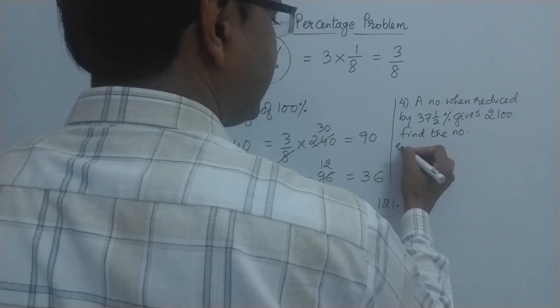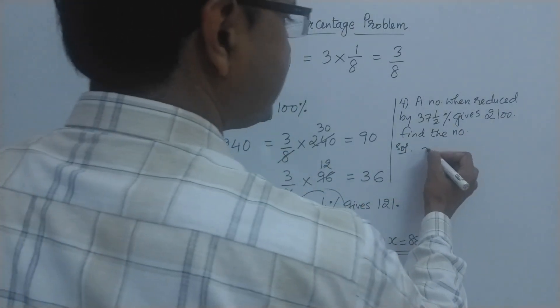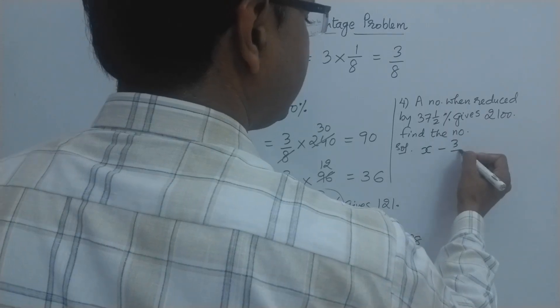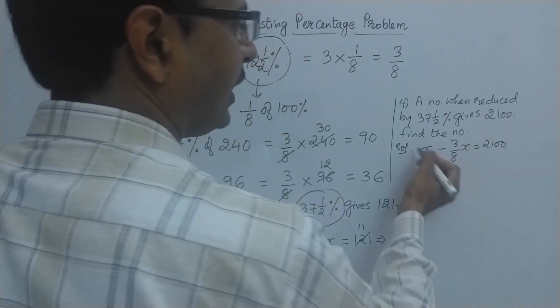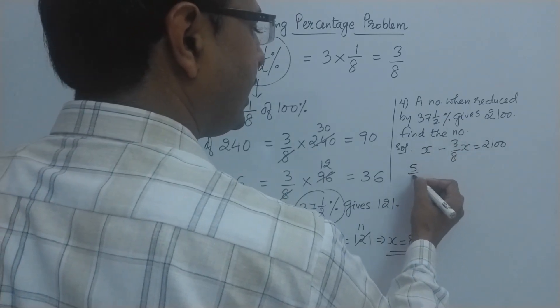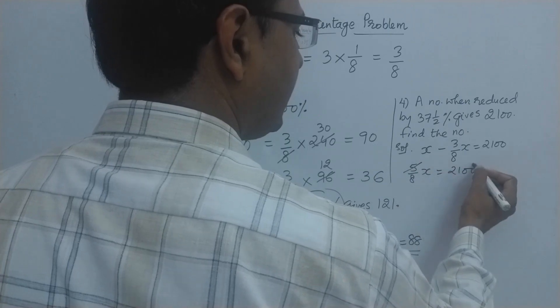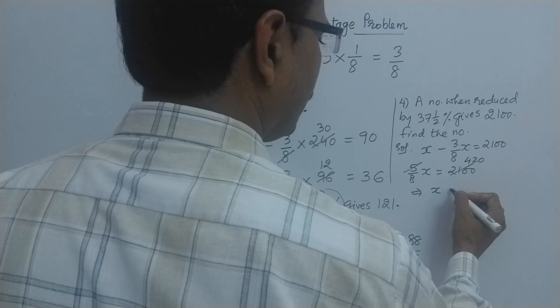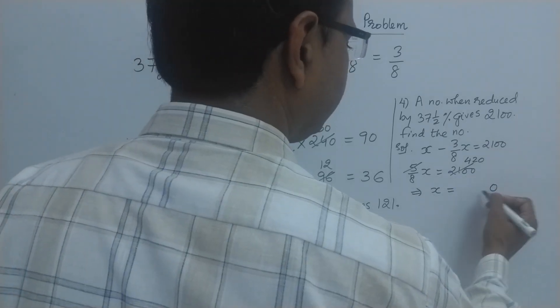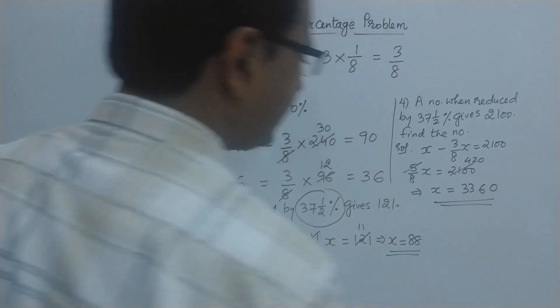Again, the problem can be solved very easily. Only difference will be you will have a negative sign here. So the number is x, and you are reducing it by 3/8 of x, thereby giving you 2100. Now 8 minus 3 is 5, so 5/8 x will give you 2100. So this goes exactly 420 times. So the value of x comes out to be 420 into 8, that is 3360. So the number is 3360.